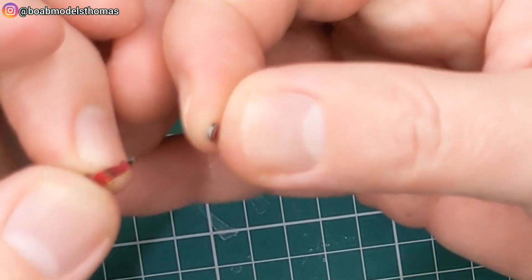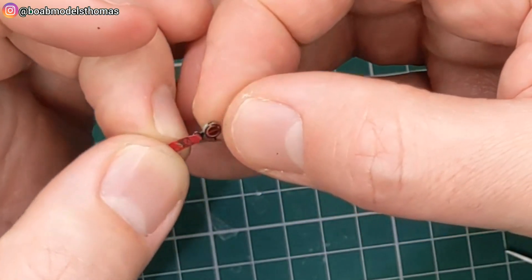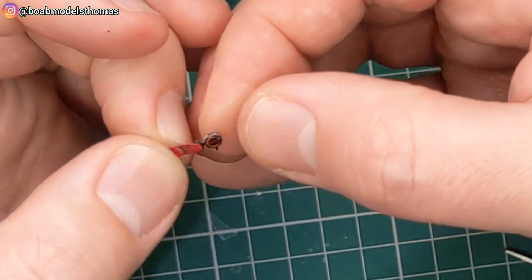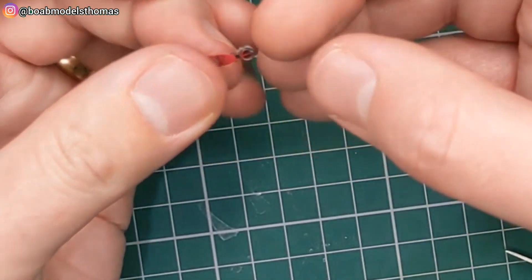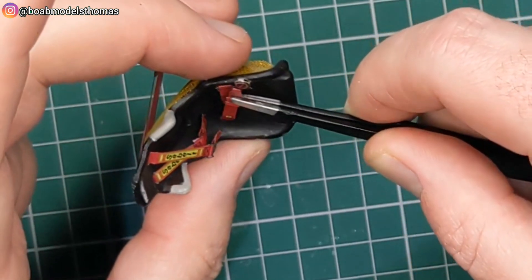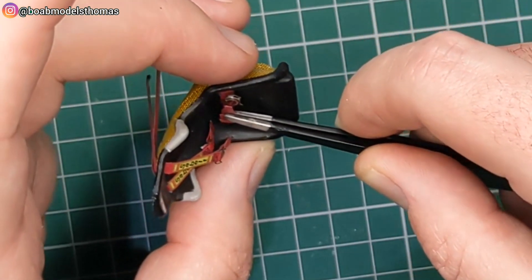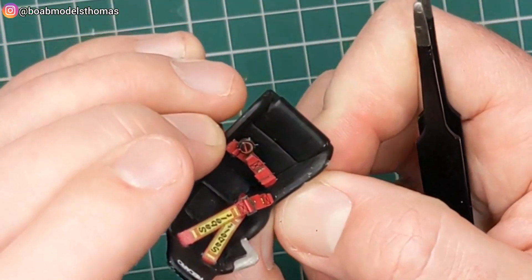And then on the other side I'm attaching the little locking buckle section. Again with a little bit of super glue gel. Let that cure and then thread it through. And it lays really nicely in the right place on top of the other one.